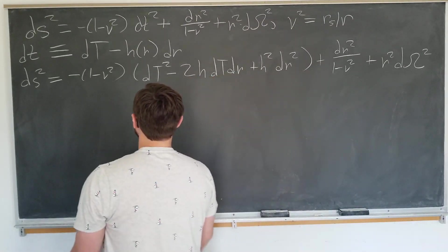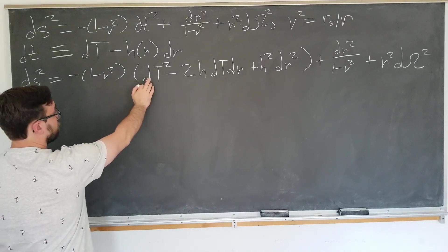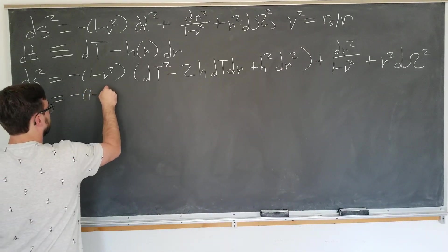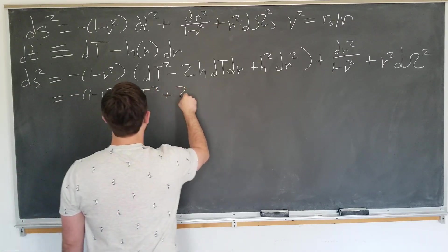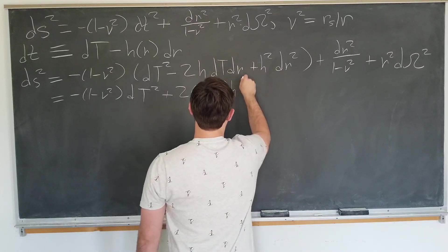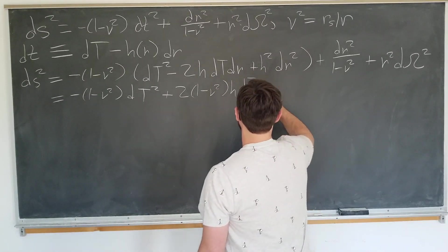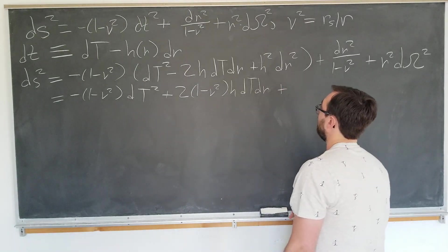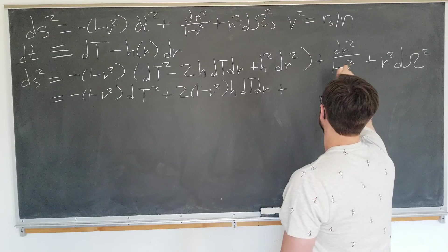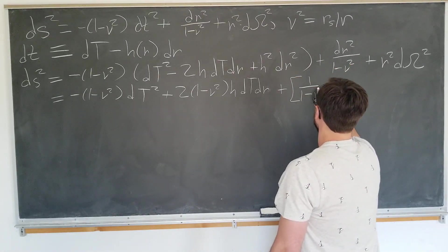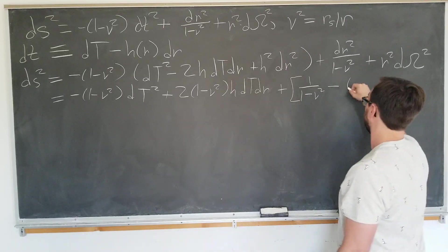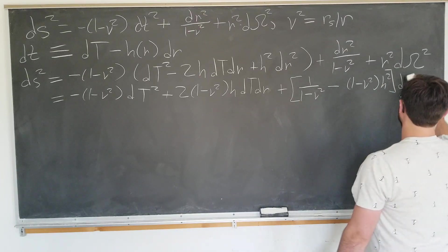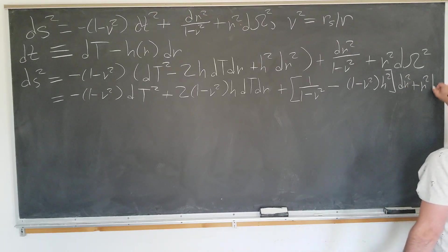Next thing that we want to do is to distribute this through and we're going to pay special attention to the dr squared terms. So I'm going to get minus 1 minus v squared d capital T squared plus 2 times 1 minus v squared h dt dr. And finally, for the dr squared term, we're going to have 1 over 1 minus v squared minus 1 minus v squared h squared dr squared plus r squared d omega squared.